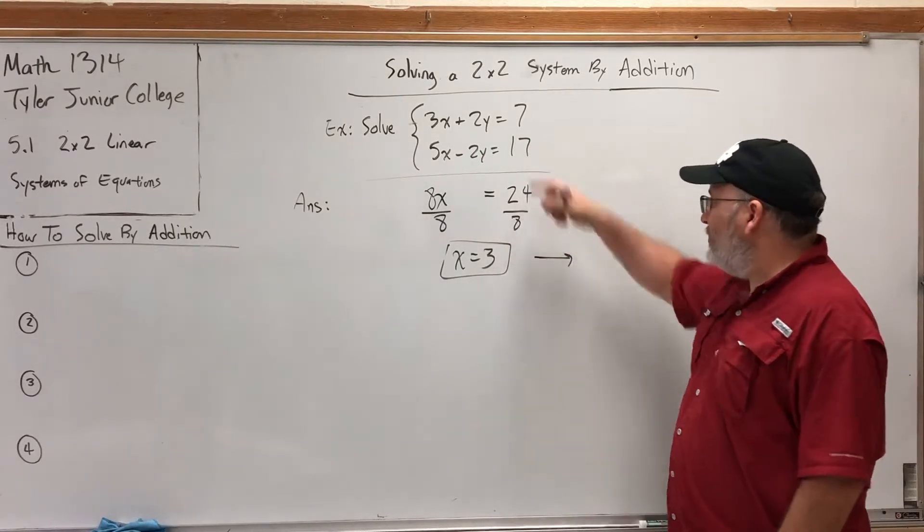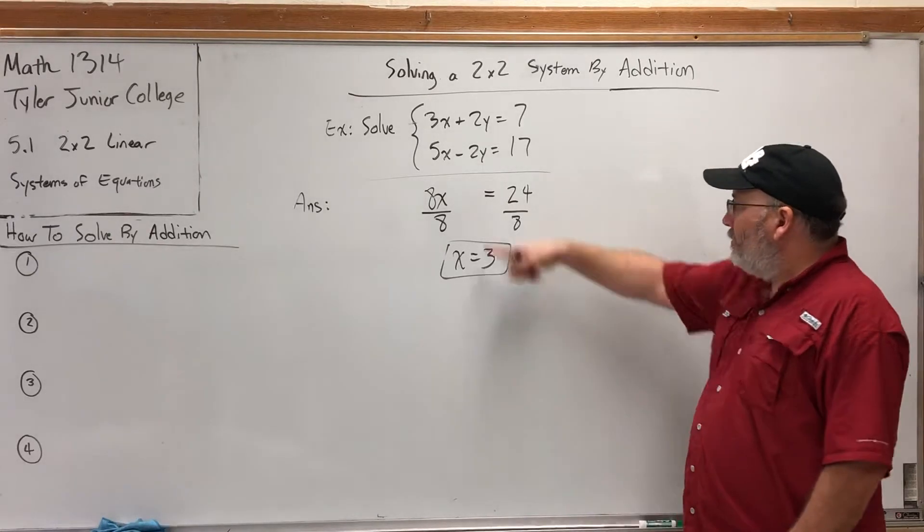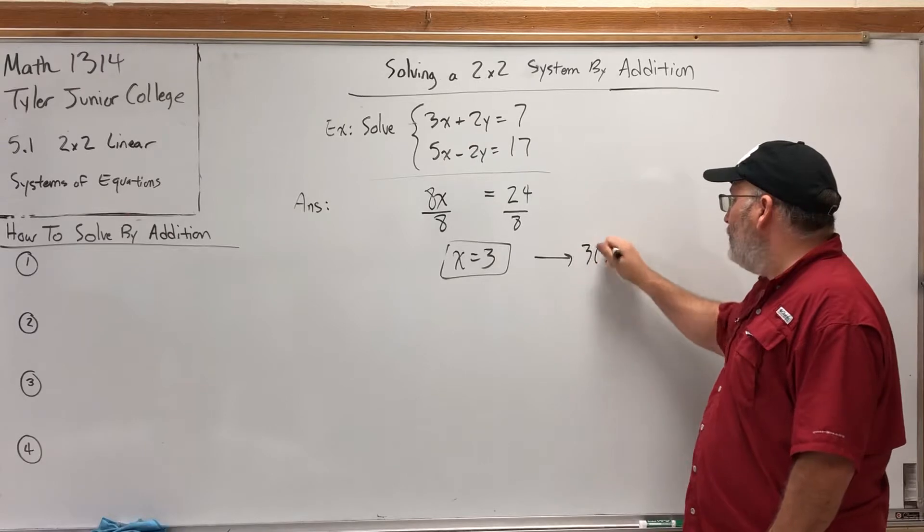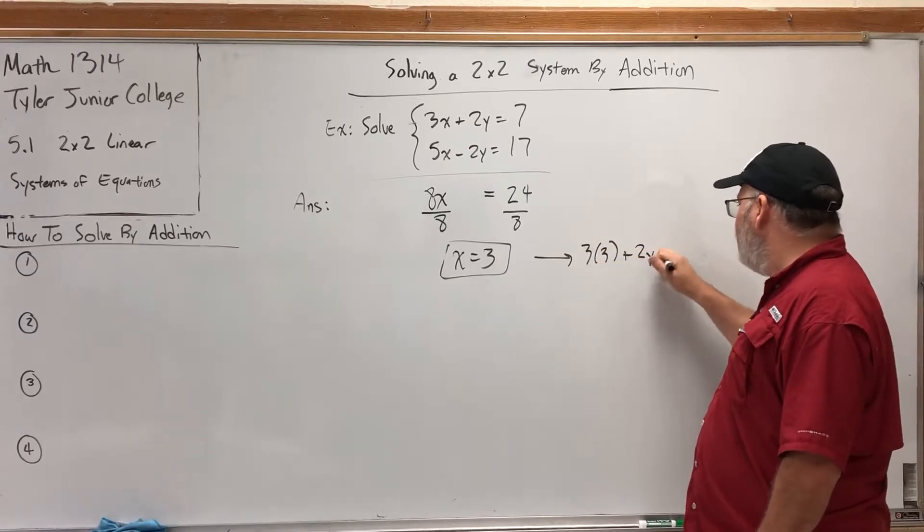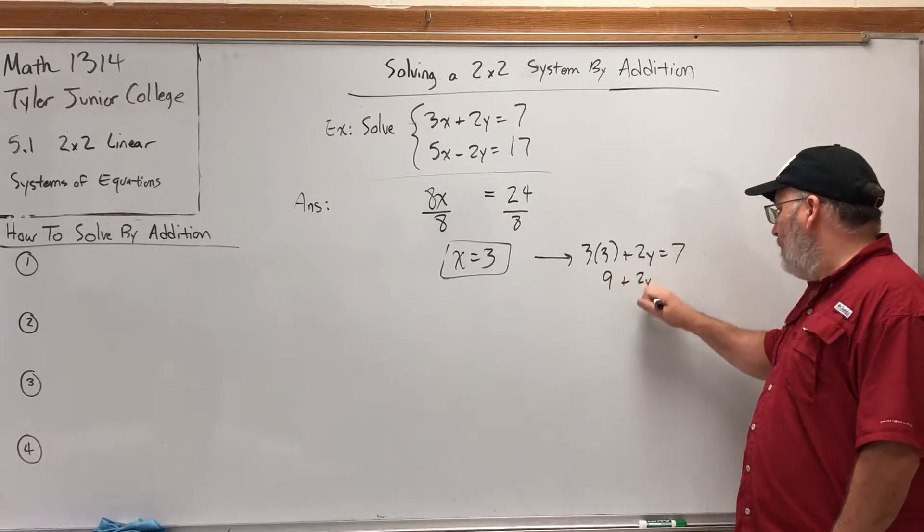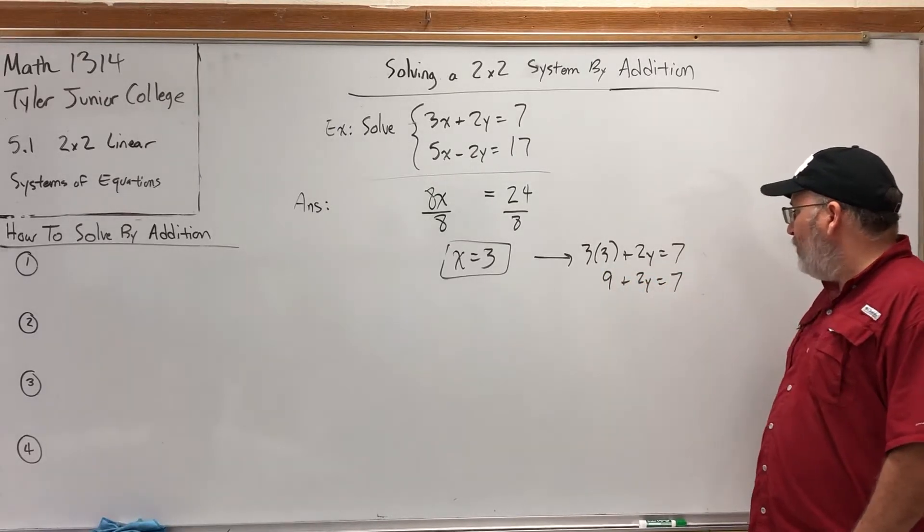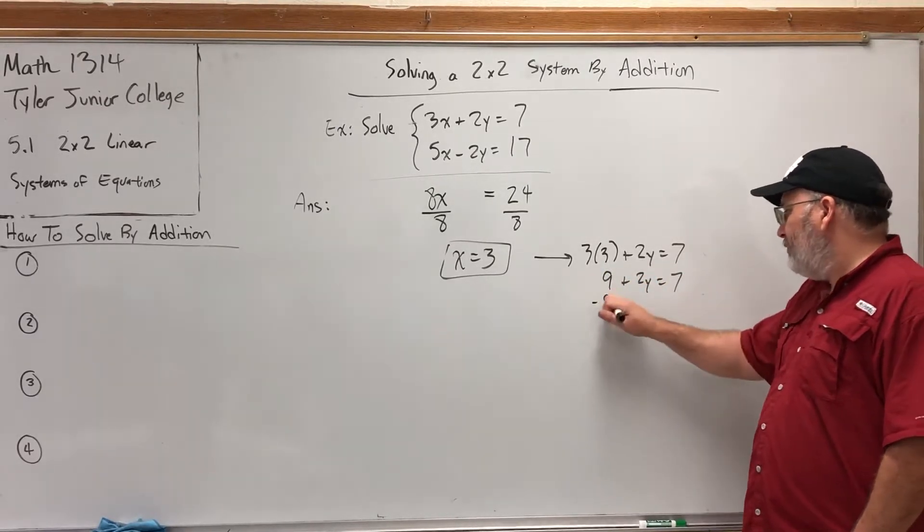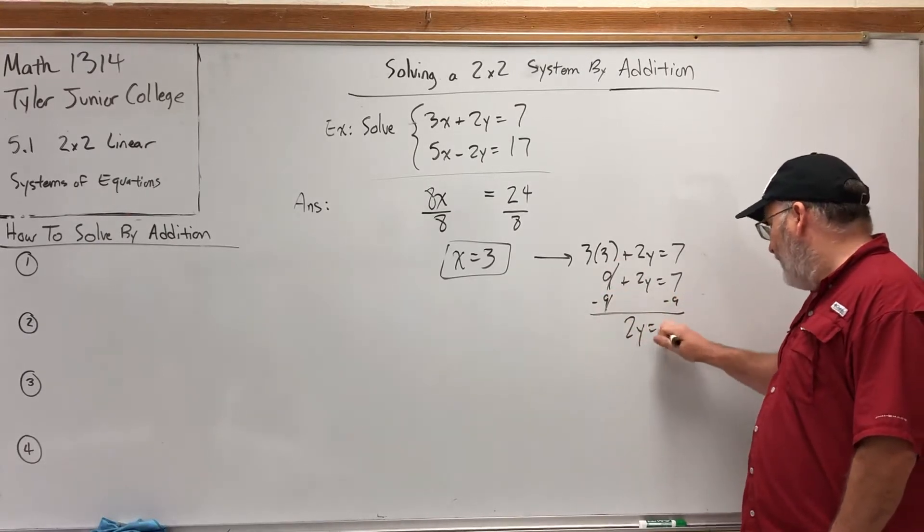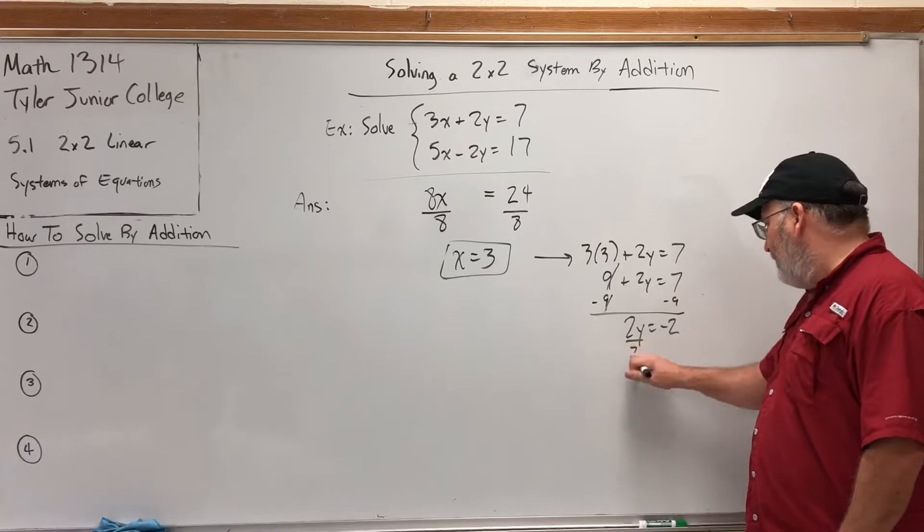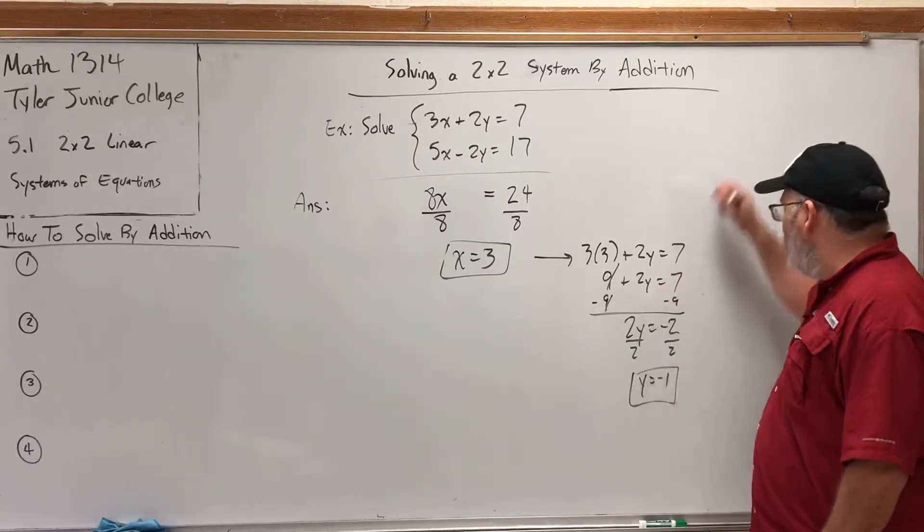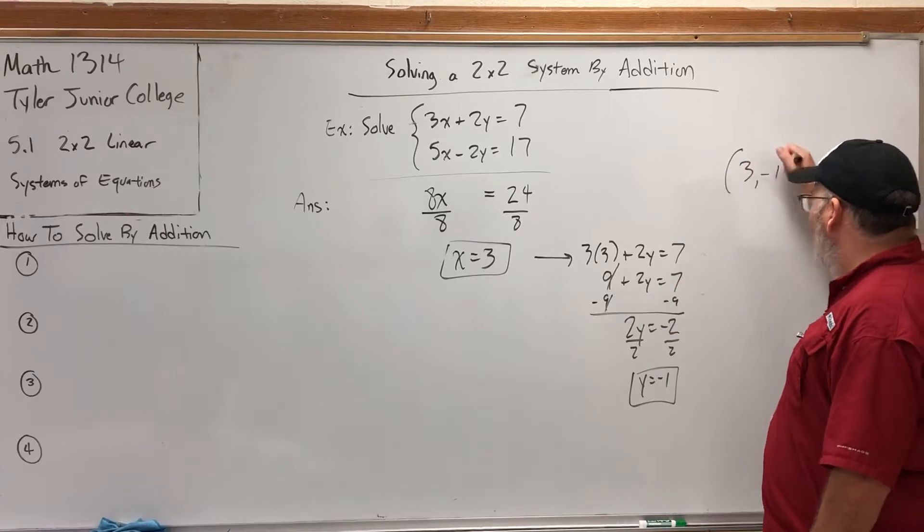Let's take it to the first equation. Substitute the 3 for the x. We'll get 3 times 3 plus 2y is equal to 7. 3 times 3 is 9. So we have 9 plus 2y is equal to 7. Subtract 9 from both sides. Get 2y equals negative 2. And then divide both sides by 2 to get y equals negative 1. So we're getting the same solution we got before, which was 3 comma negative 1.